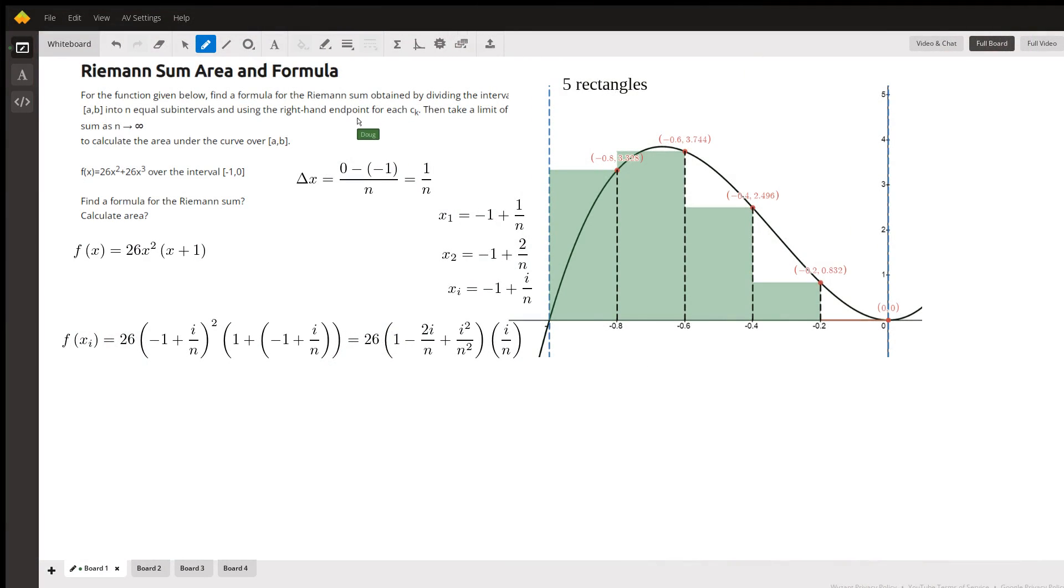I'm going to go through this video pretty quickly, so pause the video when appropriate and take some notes. We're supposed to find the area under this curve on the interval from negative 1 to 0 using a Riemann sum, taking the limit of that sum as the number of rectangles approaches infinity.